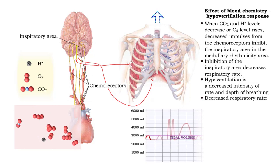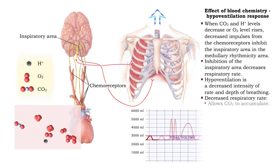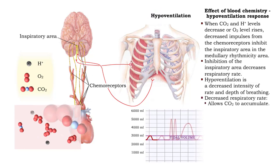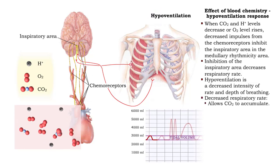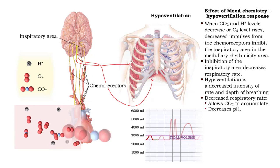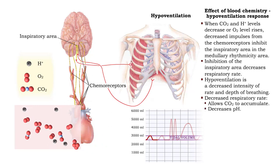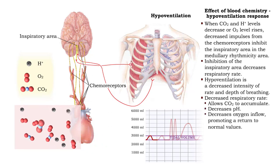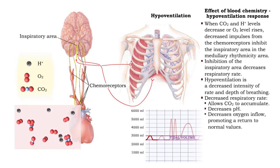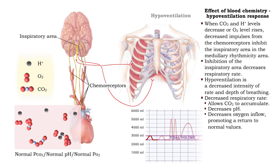Decreased respiratory rate allows carbon dioxide to accumulate, thereby decreasing pH, and decreasing oxygen inflow, promoting a return to normal values.